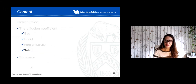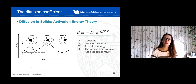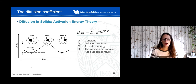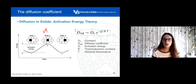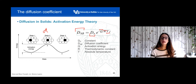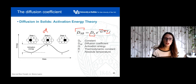The last case is diffusion in solids. Diffusion in solids is not that common, though it matters in applications such as absorption. The value of the diffusion coefficient in solids can be determined as a function of a constant, the activation energy, the thermodynamic constant, and the absolute temperature. In this course we won't go over diffusion in solids in detail, but there is an equation available.